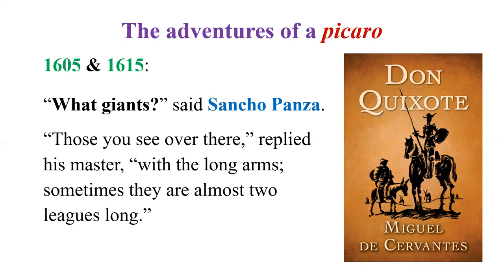Don Quixote features an old man obsessed with reading romance and adventure novels who sets out on adventure. He takes a horse and invites his neighbor Sancho Panza, who travels on a donkey named Dapple. The pair — a tall lanky man on a horse and a stout man on a donkey — creates humor. Don Quixote promises Sancho Panza treasure if he wins battles, but that innocent man doesn't know real adventures are scarce.